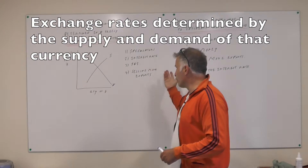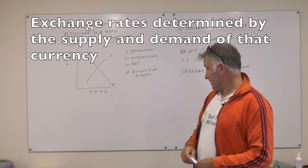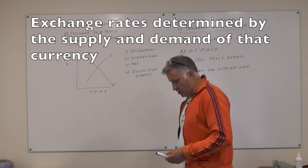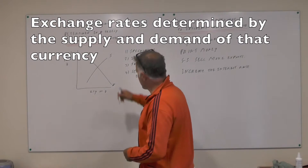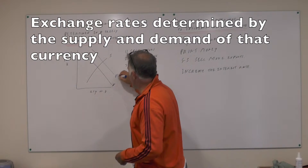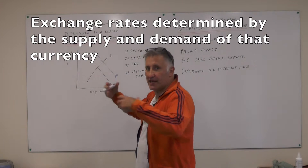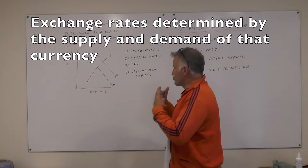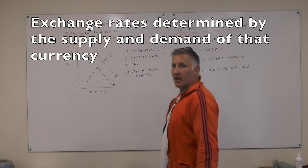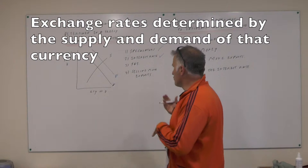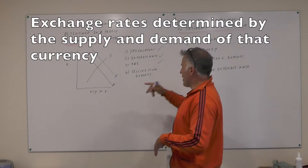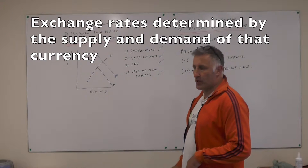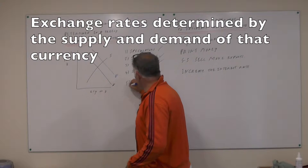I've got down here four things that will influence the exchange rate. If speculators suddenly think your exchange rate's a really good bet, that will increase the demand for sterling, because they will put their money into your country. If the interest rate goes up, that will also increase the demand for sterling. If your country attracts loads of foreign direct investment, that will increase the demand for sterling. And if you sell more exports, that will also increase the demand for sterling.